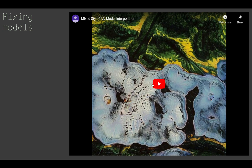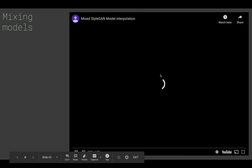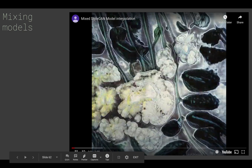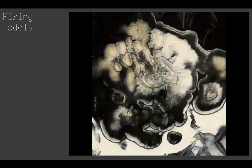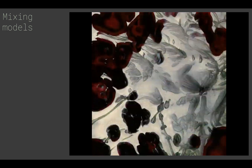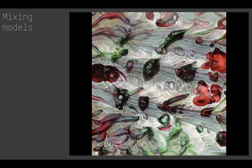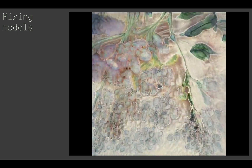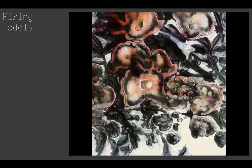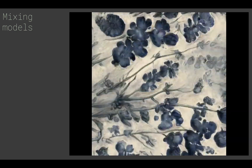Here's an example of a video I did — a mixed model between my floral data sets and some abstract oil paintings. You get a little bit of those flower patterns but also a very abstract oil paint texture. This is a place where you can create something new that isn't just fake examples of the data you trained on, but you can add a little bit of your own personality or texture.